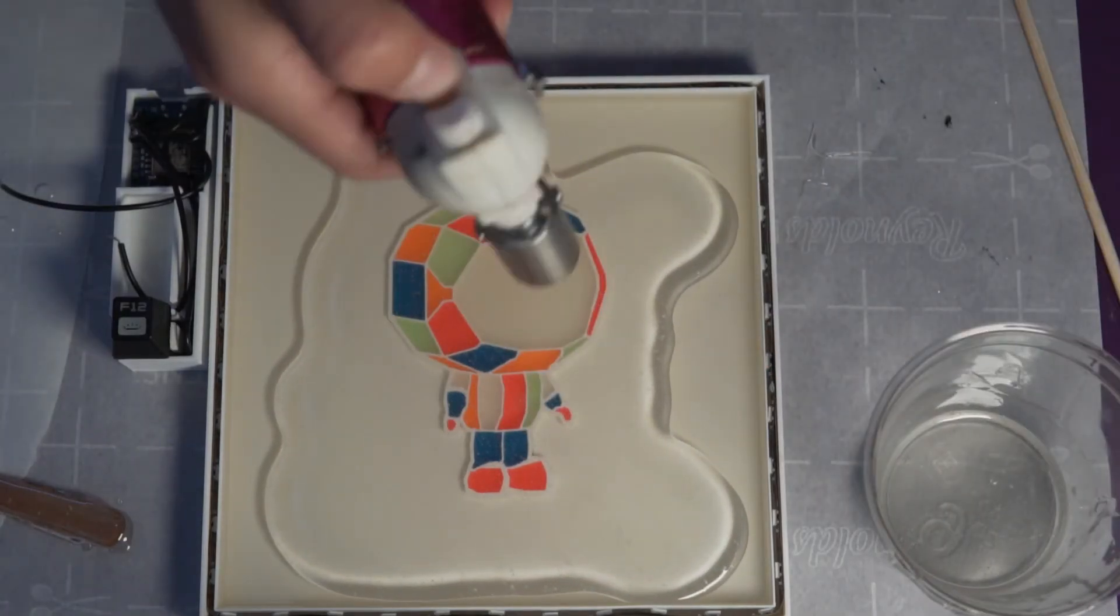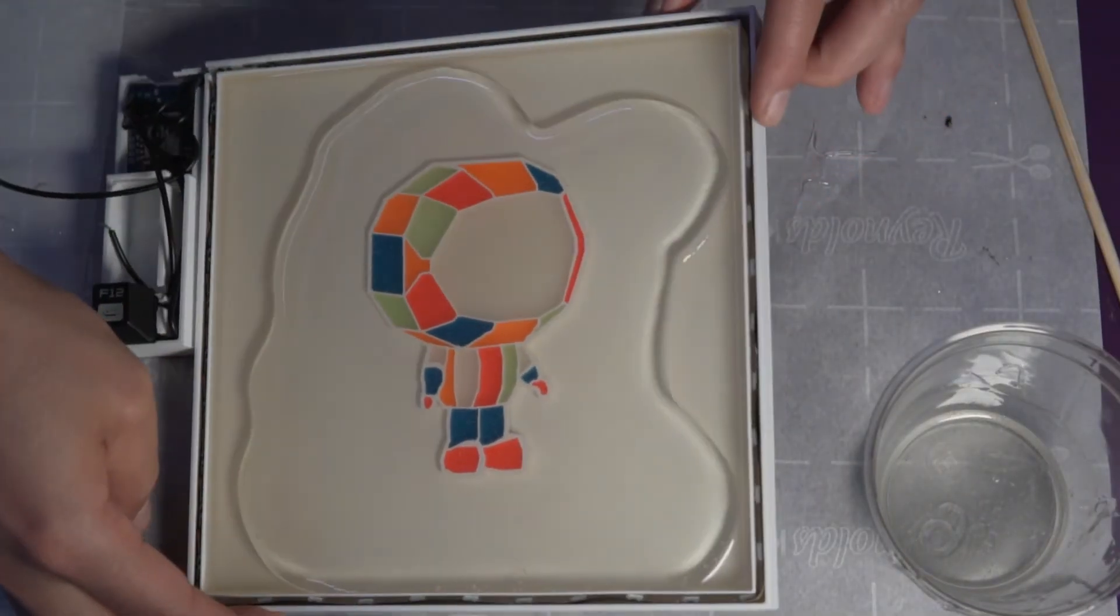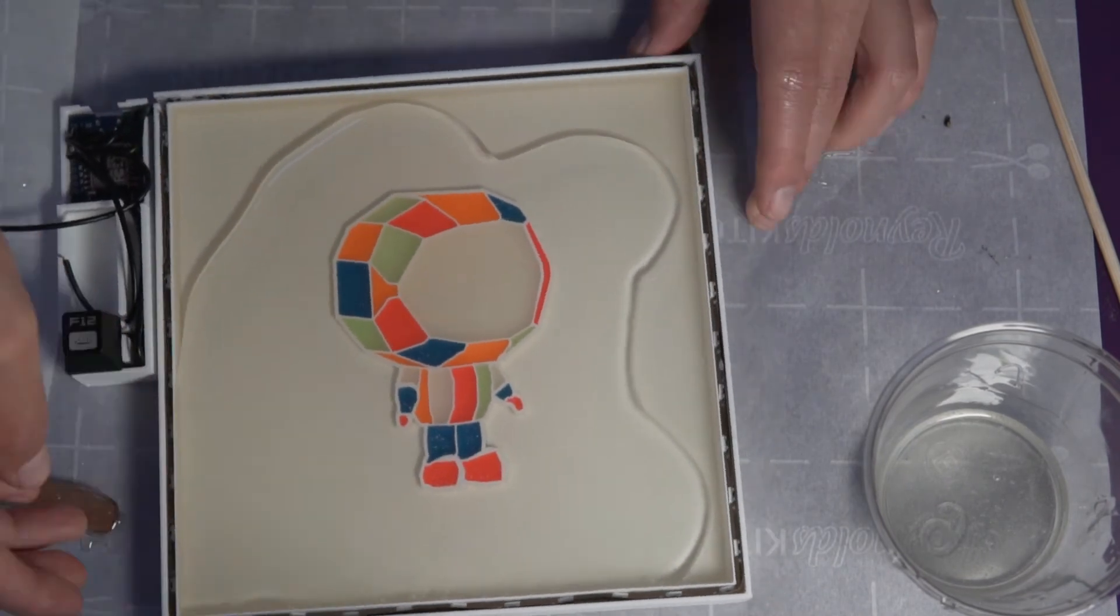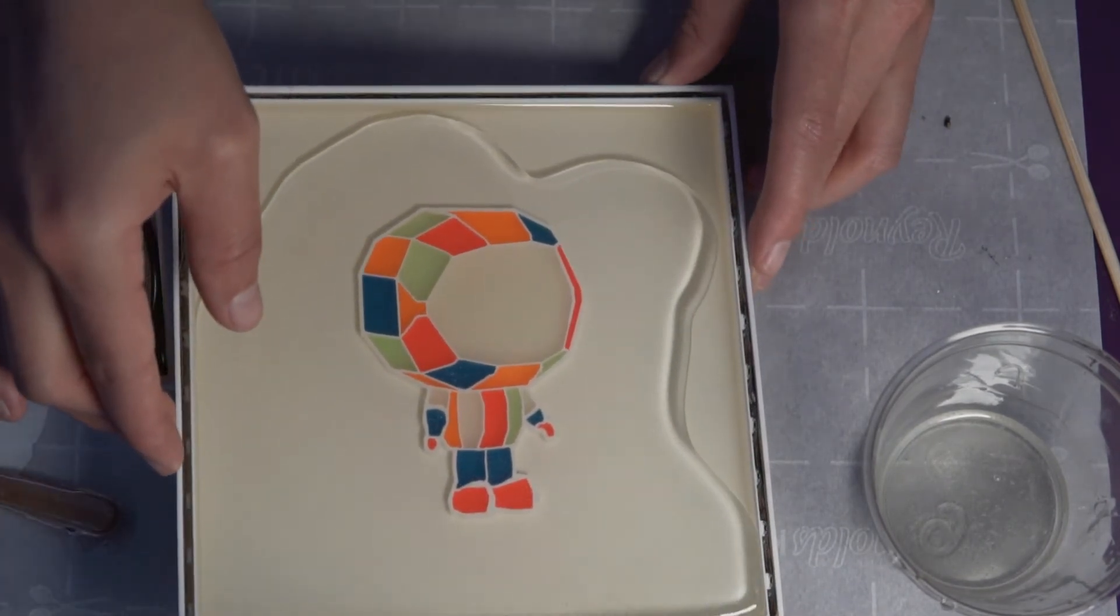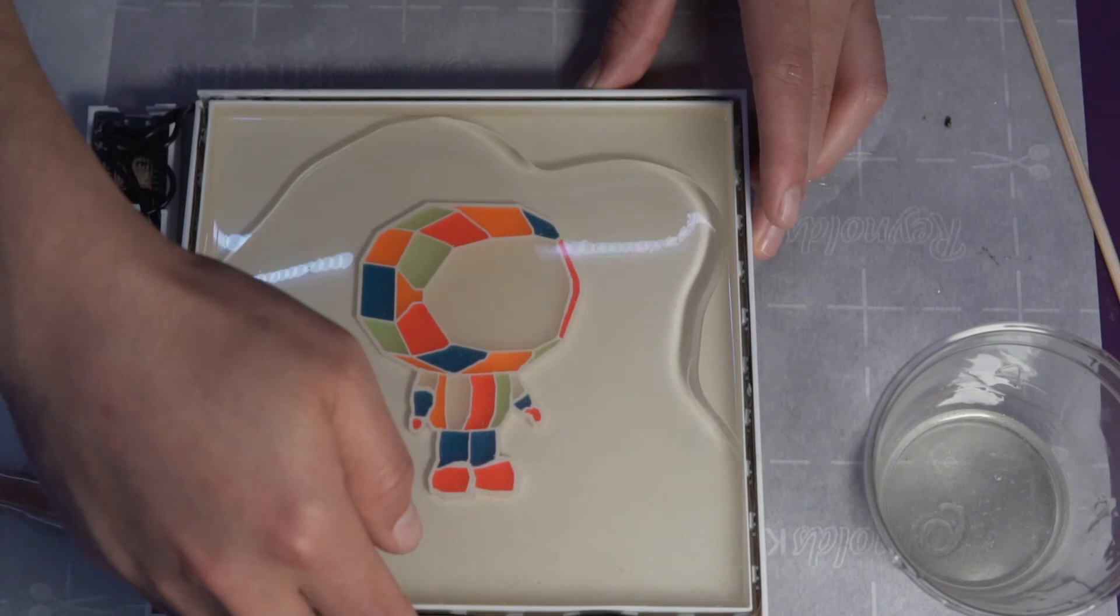And now we're on to the fourth layer and everything is basically covered. We're just making sure that this is going to be a very flat layer and that it goes all the way up to the brim.